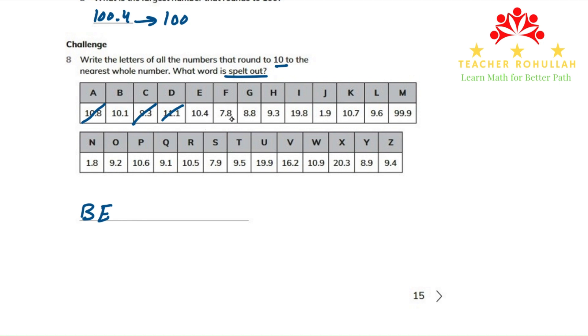In part F, we have 7.8 and it rounds to 8, which is not rounding to 10. 8.8 also does not round to 10. 9.3 also crossed. 19.8 also very far from 10. 1.9 rounds to 2. 10.7 rounds to 11. And 9.6 also rounds to 10, so I will write the letter L also over here.